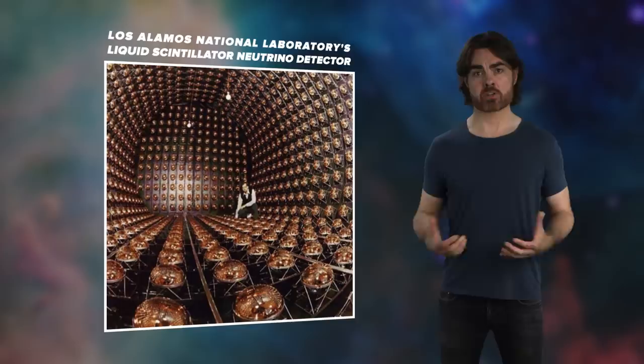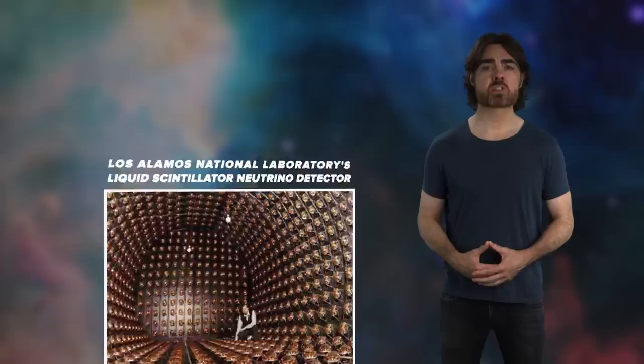Miniboon then combined their results with that of an older experiment that has also detected a hint of this excess. That was the liquid scintillator neutrino detector experiment at Los Alamos, which in 2001 published a 3.8 sigma excess in electron neutrinos. Combined with the 4.8 sigma Miniboon result, the authors claim a 6.1 sigma signal, which would be considered extremely significant.